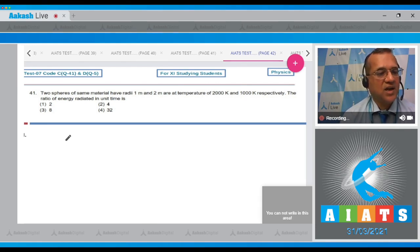The energy radiated per unit time is equal to sigma T to the power 4 multiplied by the surface area. Now energy per second in the first and second case will be equal to T1 to the power 4 into A1 divided by T2 to the power 4 into A2.